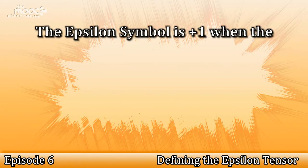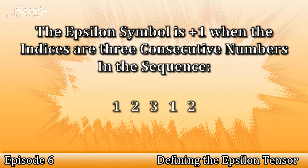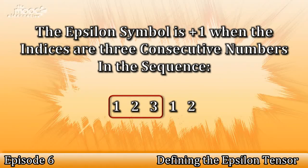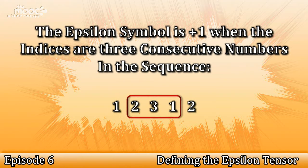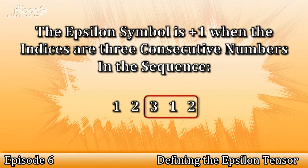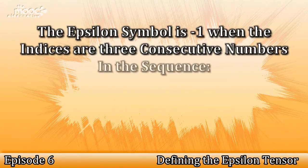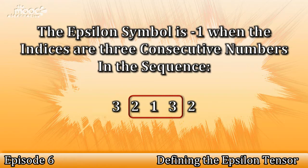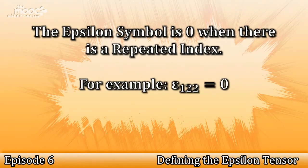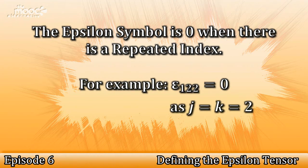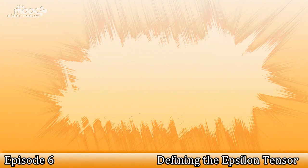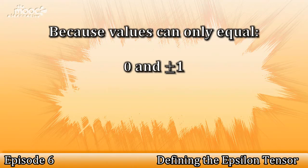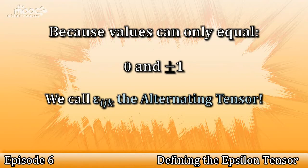The epsilon symbol is plus 1 when i, j, k is found in the following list of numbers: 1, 2, 3, 1, 2, and it is minus 1 when i, j, k can be found in 3, 2, 1, 3, 2. If we have, for example, 1, 1, 2 for i, j, and k, then the epsilon symbol is equal to 0 because we can't find it in either of the lists of numbers. Because it can equal plus or minus 1, we affectionately call the epsilon symbol the alternating tensor.